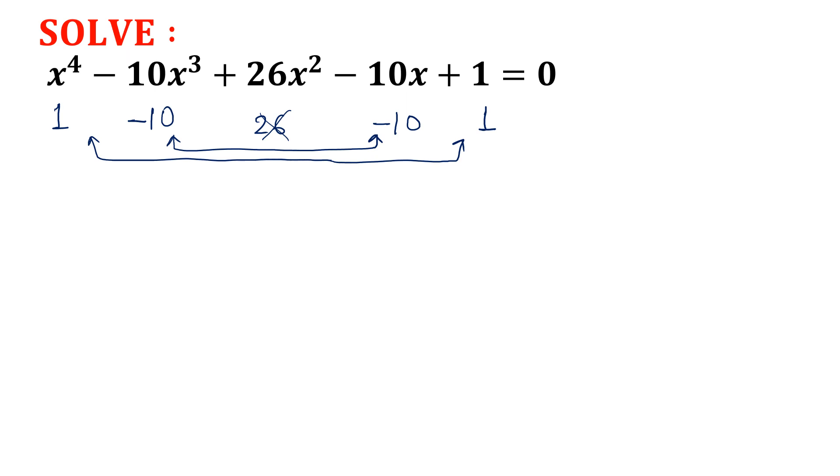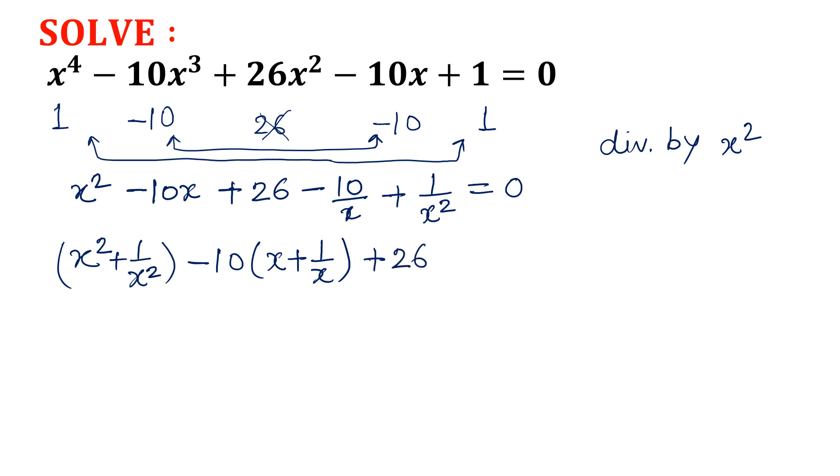Now that method is I am going to divide this equation by x square. So once I will divide this equation by x square, x power 4 over x square becomes x square, minus 10x plus 26 minus 10 over x plus 1 over x square is equal to 0. Now put x square plus 1 over x square at one place. Then minus 10 I will take outside, it will become x plus 1 over x. Then what is left? That is 26 equal to 0.